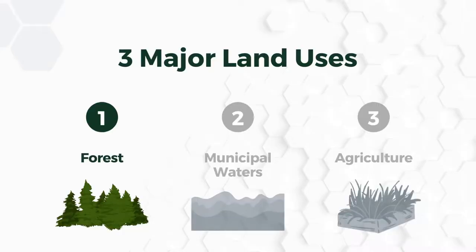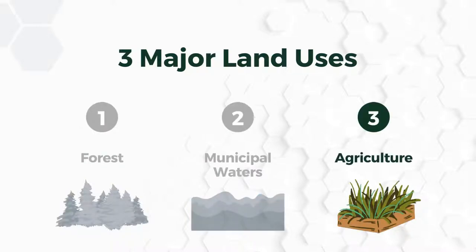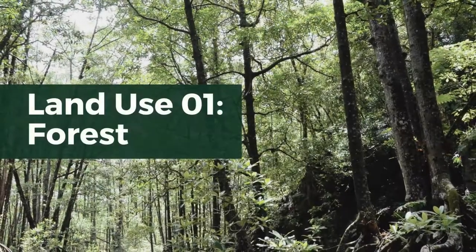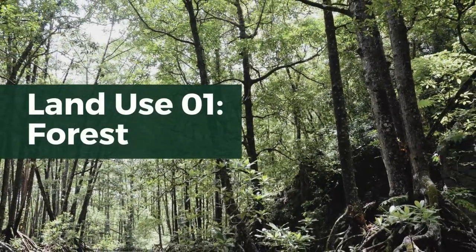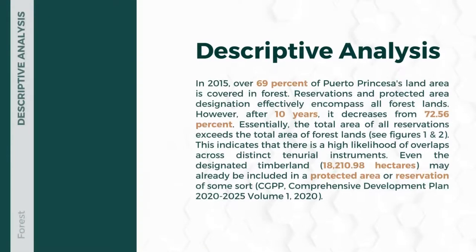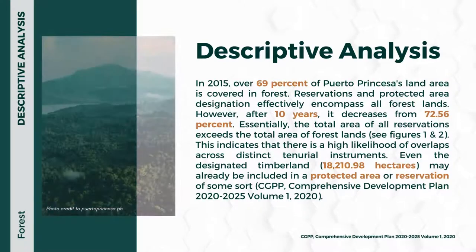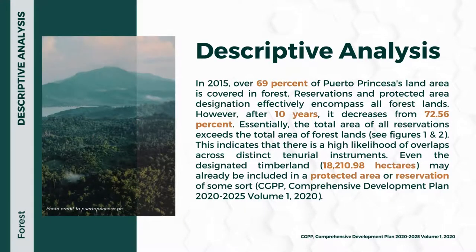The team has selected three major land uses from ridge to reef to conduct the land use analysis: forests, municipal waters, and agriculture. Land use number one is forests. For the descriptive analysis, in 2015, Puerto Princesa's forest land area covers 69% of the 219,339.40 hectares total area.